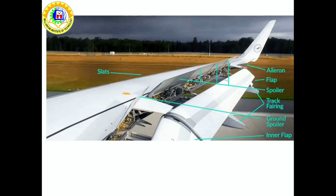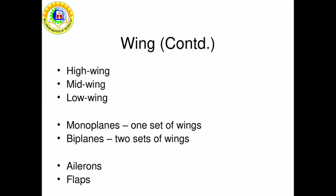Flaps are used during takeoff and landing. Ailerons are the panels near the tip of the wing that move up and down, causing lift to increase when they go down or decrease when they go up. Spoilers are panels on the top of the wing that reduce lift. A monoplane is a one-wing plane; since the 1930s most aeroplanes have been monoplanes.